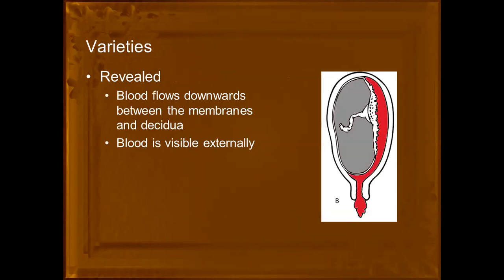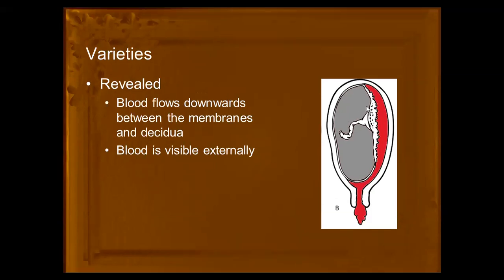There are three varieties of abruptio placenta: revealed, concealed, and mixed. In the revealed type, the placenta has separated and bleeding has started, and the blood is visible outside. The bleeding starts at the placental site and flows downwards between the membranes and the decidua, and the blood is visible externally through the external os.